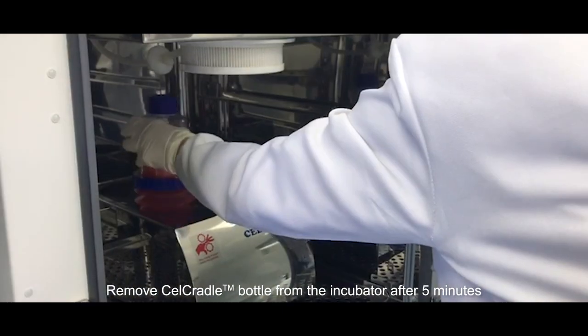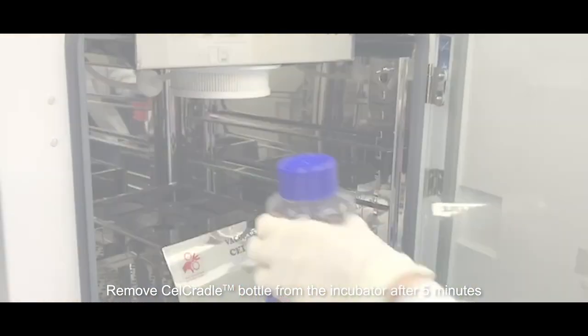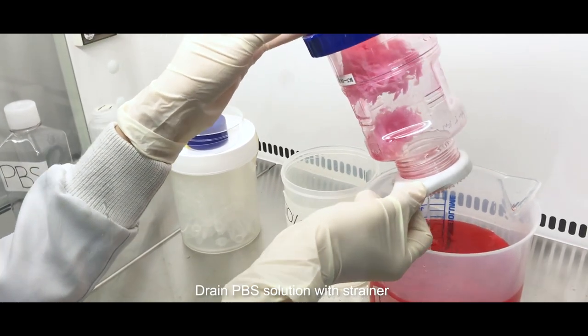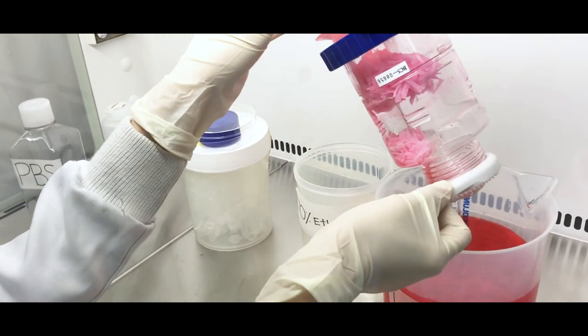After five minutes of incubation, remove the bottle from the cell cradle stage. Drain the PBS solution using a strainer. Subsequently, repeat the rinsing steps again.